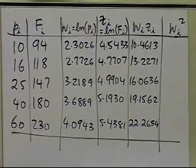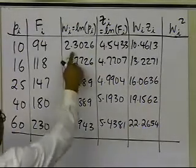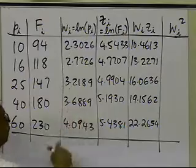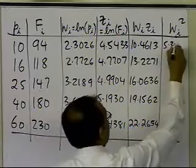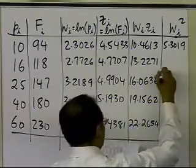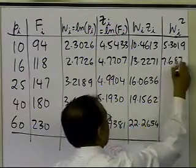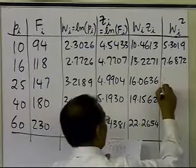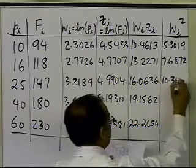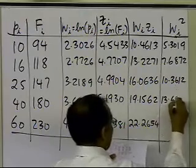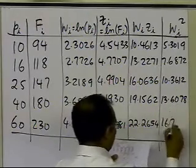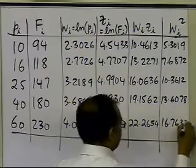I also need the w_i squared values, which is simply the square of these numbers here. That's 5.3019, 7.6872, 10.3612, 13.6078, and 16.7637.